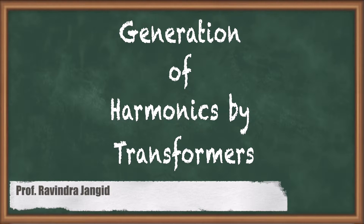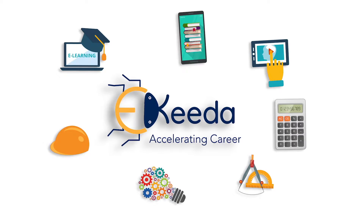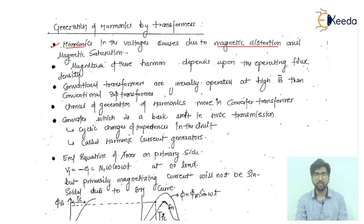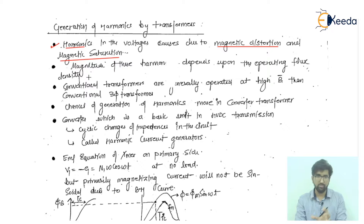Hello everyone, welcome to Ikeda platform. This is Ravin Jangir, your electrical faculty. In this video I am going to talk about the generation of harmonics by the transformer. Point number one: harmonics in the voltages are caused due to magnetic distortion and magnetic saturation. Whatever harmonics arise in the transformer are mainly because of magnetic distortion.